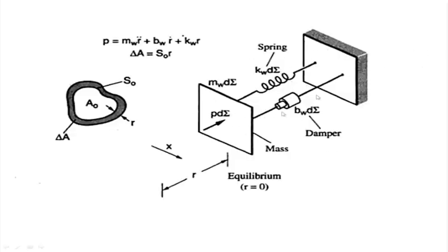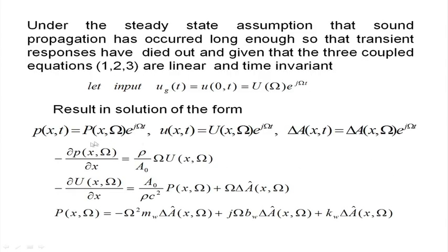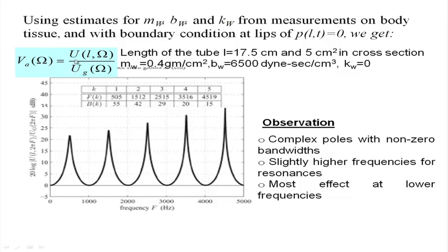If I consider the second-order equation of the spring-mass mechanical oscillator, this gives three equations. From those three equations, I get an analytical solution for the frequency response: V_A(ω) = U_L(ω) divided by U_G(ω).